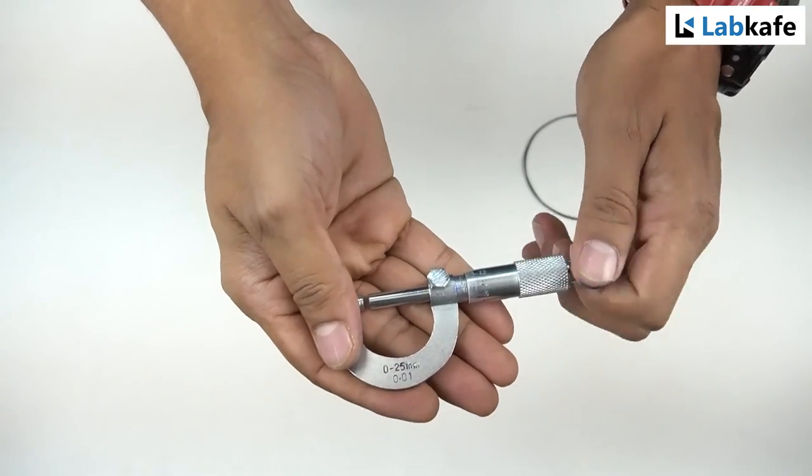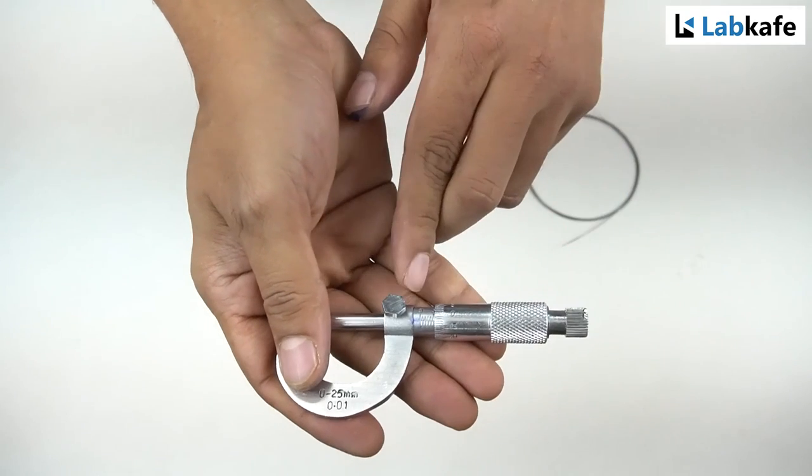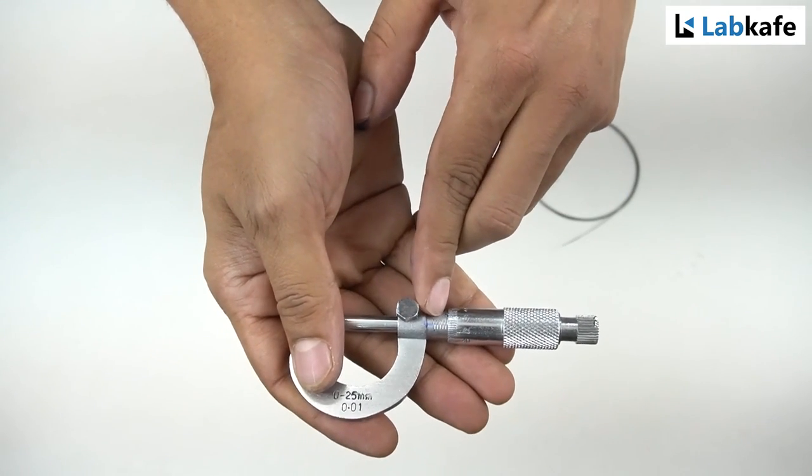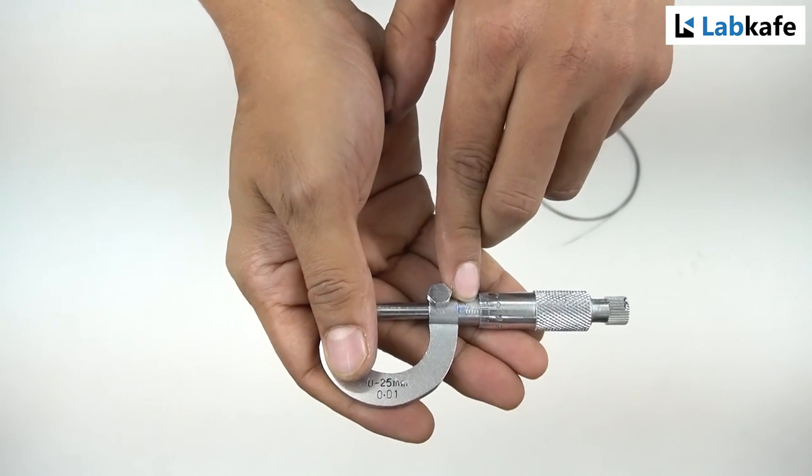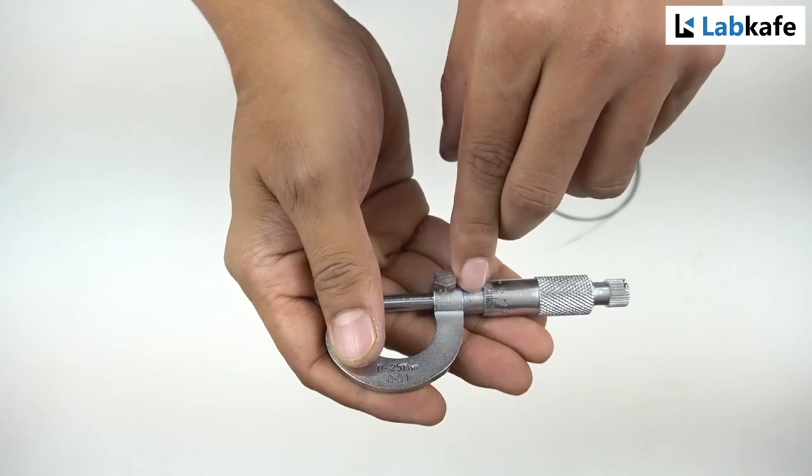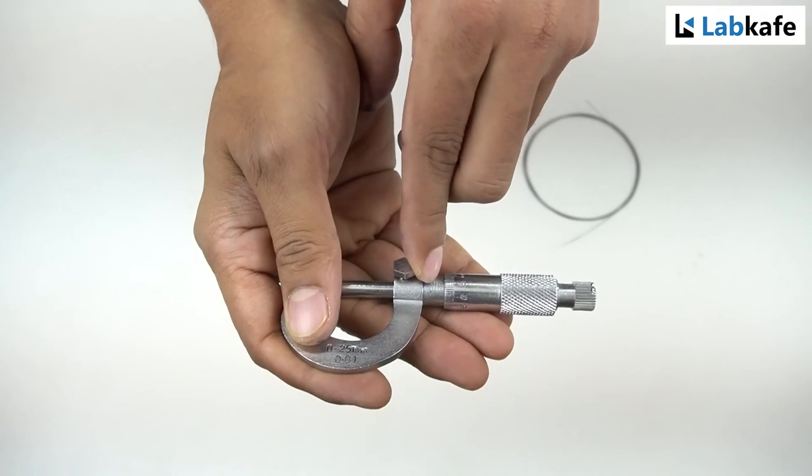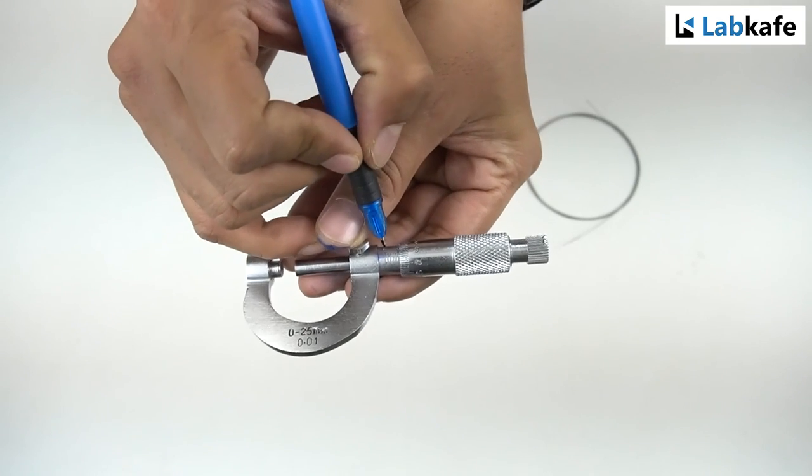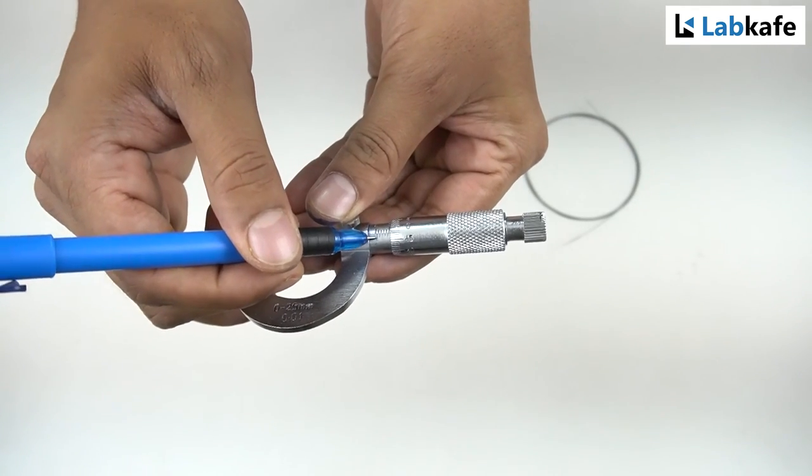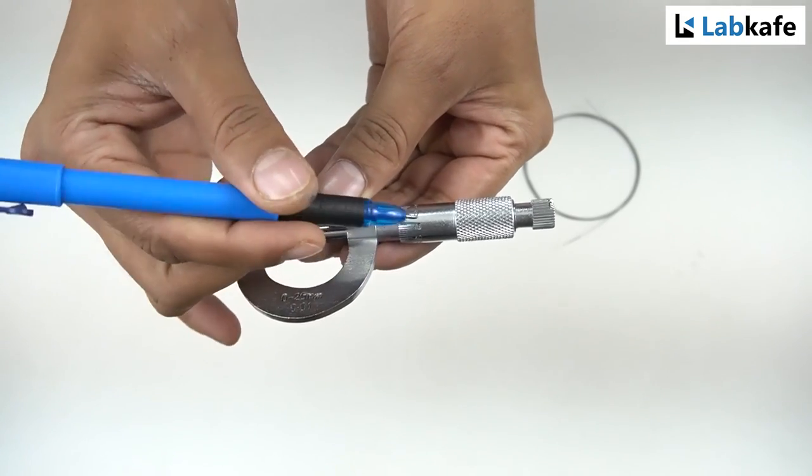And there is a linear scale which is from 0 to 25 mm. You can see from 0 to 5 there are 5 divisions which means each of the divisions is 1 millimeter. You can also see there is another division between each of the one divisions. So each of the divisions are 0.5 millimeter. So if this is zero then this will be 0.5, this will be 1, this will be 1.5 and so on.